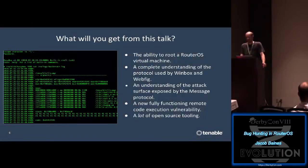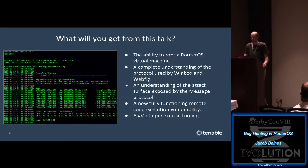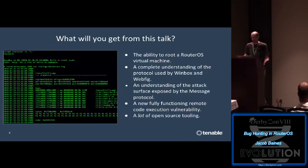Bug hunting in RouterOS is a generic title so you might be wondering what you'll actually learn. From my point of view this talk is purely practical - a dummy's guide to hacking RouterOS. After this talk you'll be able to root a VM, know how to communicate over ports 8291 and 8728, understand how the Nova binaries relate to the message protocol, have a boatload of bad C++ code to read, and most importantly I'm going to share a brand new vulnerability we can all play with.